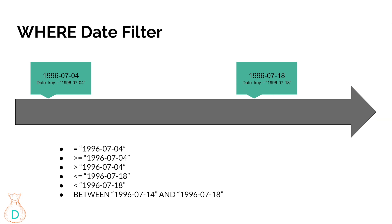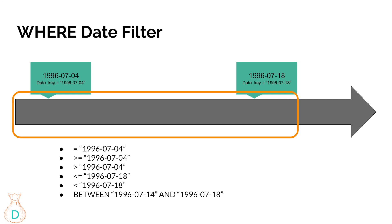Less than or equal to July 18th includes July 18th and anything before it. Be careful using this filter without a lower bound, because you could accidentally pull years of data and run into memory issues. The BETWEEN operator lets you put a start and end date — you should always start with the smaller date — and it includes both endpoints, so BETWEEN July 4th AND July 18th includes both dates.